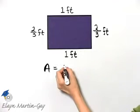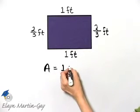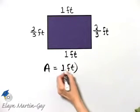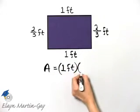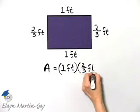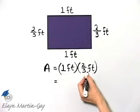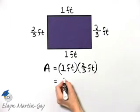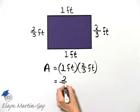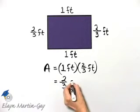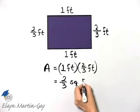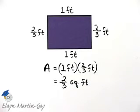So length being one, I'll go ahead and write down foot this time, width being two-thirds foot. So what is the product of one times two-thirds? One times two-thirds is two-thirds, and then feet times feet, that's square feet. What is the area of this rectangle? Two-thirds square feet.